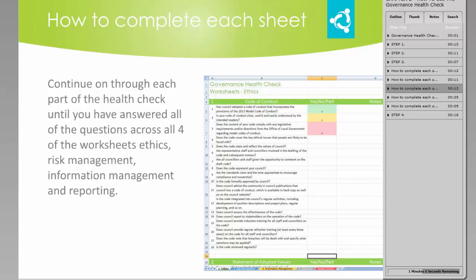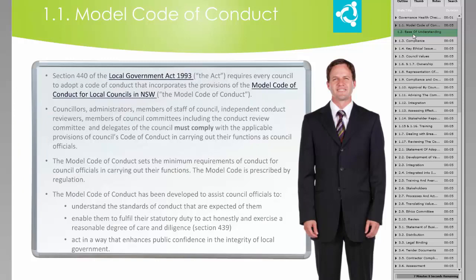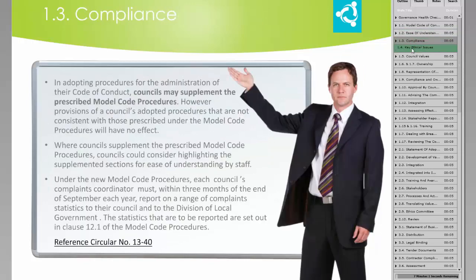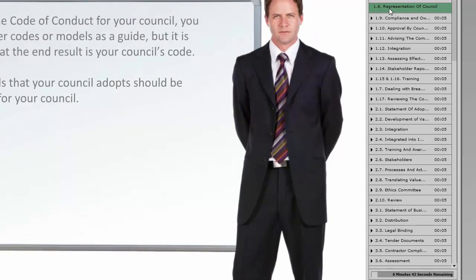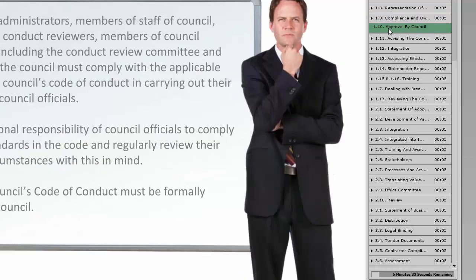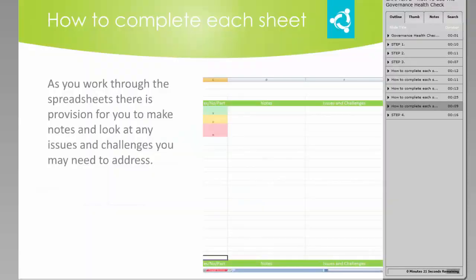Continue on through each part of the health check until you have answered all of the questions across all four of the worksheets: Ethics, Risk Management, Information Management, and Reporting. As part of the health check, we have provided work-through modules that you can access for assistance and further information. There is one work-through for each of the areas covered in the health check, and the pages are numbered to correspond with the question numbering on the health check spreadsheet. These work-throughs can be accessed through E-Connect at any time as you make your way through the Governance Health Check. As you work through the spreadsheets, there is provision for you to make notes and look at any issues and challenges you may need to address.